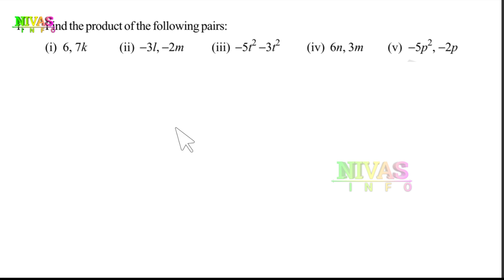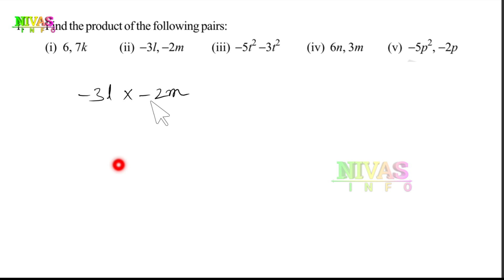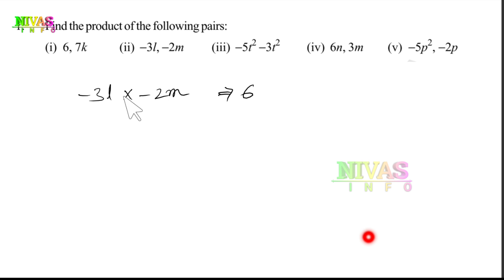Next, the second one: minus 3L into minus 2M. Here minus into minus gives plus. Then 3 into 2 is 6. Next, L into M is LM. So the answer is 6LM.